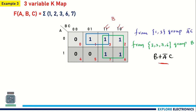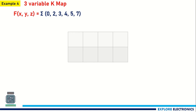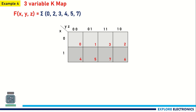Let me take the fourth example — it is a bit more complex. Again, I am writing the variables X and YZ. In the question they have given X, Y, Z. We need to fill 1 at cells 0, 2, 3, 4, 5, and 7. The remaining values are 0s.